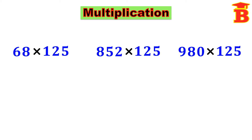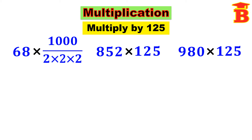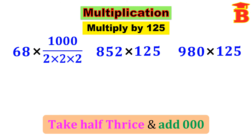Next let us multiply numbers by 125. Here 125 is nothing but 1000 divided by 8, that is 1000 divided by 2 into 2 into 2. So we have to take half of this number thrice — 3 times we divide by 2. After that, multiply by 1000, which simply means take half thrice and then add triple 0.